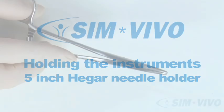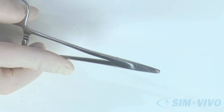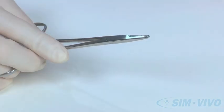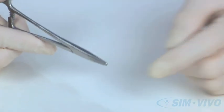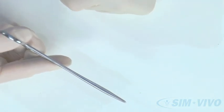This is a 5-inch Hager needle holder, sometimes called a needle driver. In looking at this instrument, a few characteristics jump out at you. One, it has a blunt end. This prevents it from damaging any tissue that it may bump into.